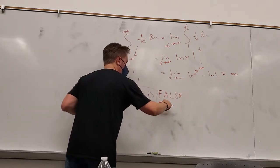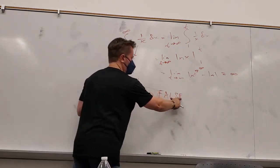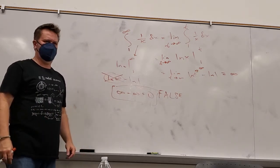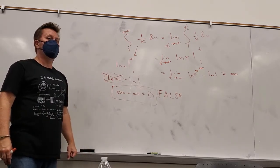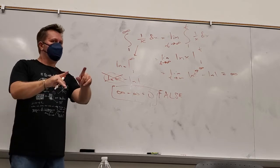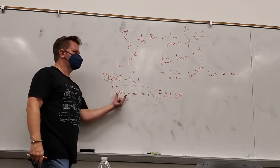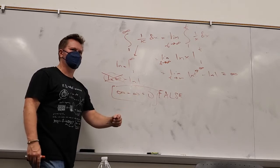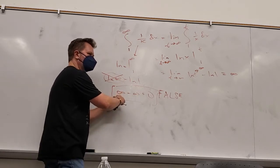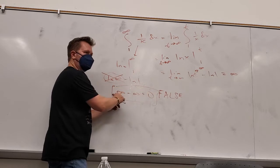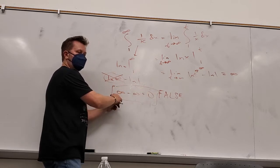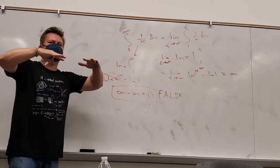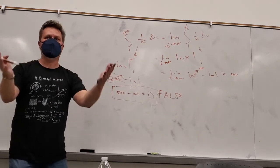Also, infinity minus infinity is not zero — that's false. It depends on which quantity is going to infinity faster. If the first is going faster, the result is positive infinity. If the second is going faster, it's negative infinity. If they go at the same pace, you could get a finite number. It's an indeterminate form.